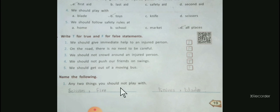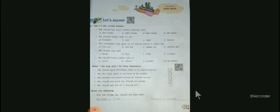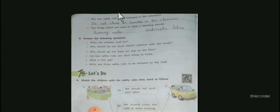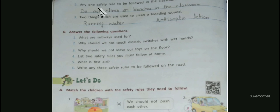Number one: Any two things you should not play with. Answer is scissors, fire, knives, and blades. It means we should not play with all these things as it may hurt us. Number two: Any one safety rule to be followed in the classroom. Answer is do not climb on benches in the classroom.